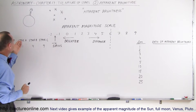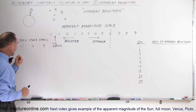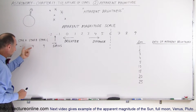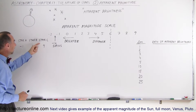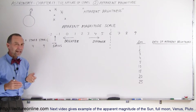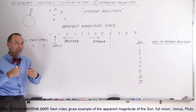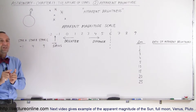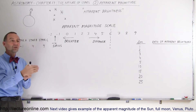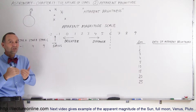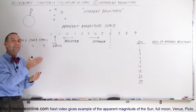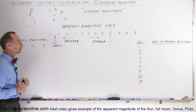Let's say we have three stars: Star A, Star B, and Star C. Star A has a magnitude of minus 1, Star B has an apparent magnitude of 4, and Star C has an apparent magnitude of 9. I should say apparent magnitude because it's how it appears to us. We also have another scale called the absolute magnitude scale, which indicates how bright the star actually is. Here we're talking about apparent brightness — how bright it appears to us.